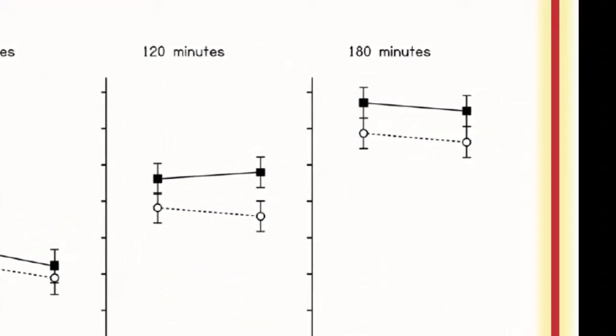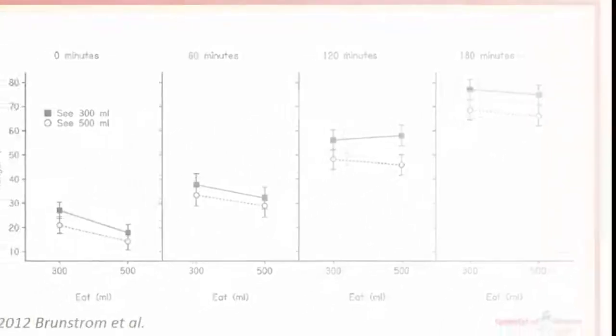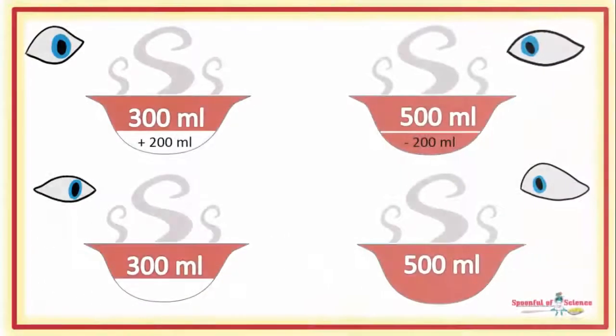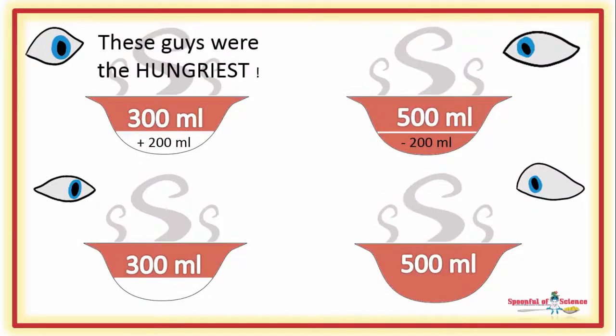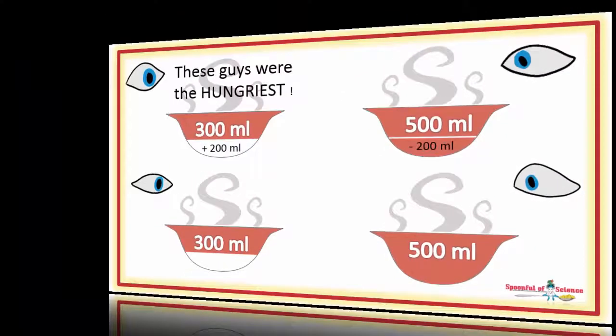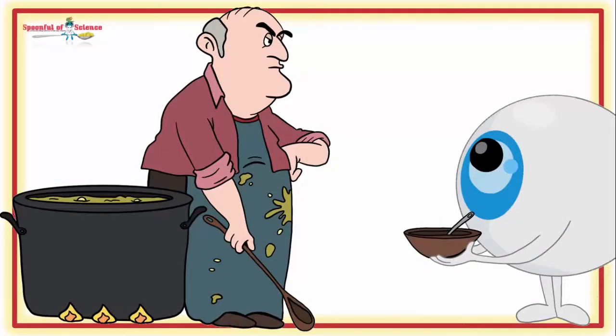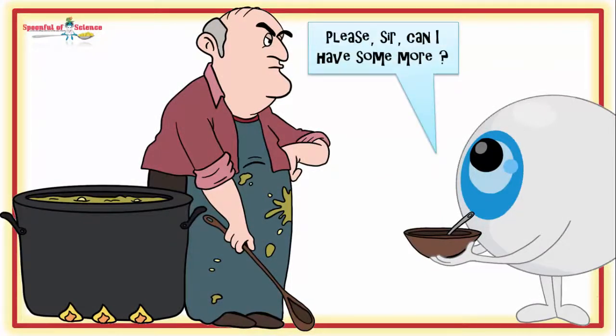The people who had seen the small bowl of soup, represented by the solid squares, felt way more hungry than the people who had seen the big bowl of soup, represented by the open circles. Seen the bowl of soup, not eaten the bowl of soup. It's a case of seeing is believing. The eyes were dictating hunger. The eyes, not the stomach.